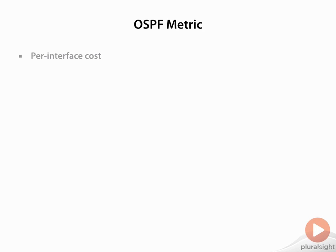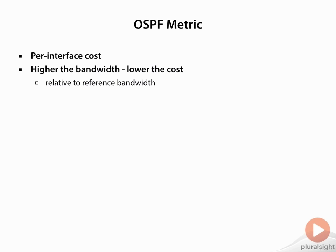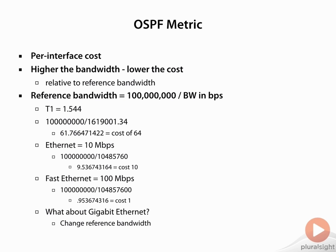Going into more detail on the OSPF metric: the OSPF metric is based on the cost of an interface. As mentioned earlier in this module, the higher the bandwidth, the lower the cost. But this is relative to a reference bandwidth value, which by default is based on Fast Ethernet. So the reference bandwidth formula is 100 million divided by bandwidth in bits per second — essentially 100 megabits per second divided by the bandwidth of the interface.